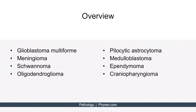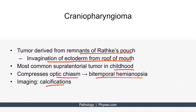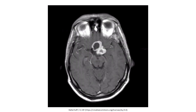The last topic is craniopharyngioma. This is a tumor derived from the remnants of Rathke's pouch, which is an invagination of ectoderm from the roof of the mouth. It's the most common supratentorial tumor in childhood and frequently compresses the optic chiasm, leading to bitemporal hemianopsia. On imaging, calcifications can be observed. Here are MRI images showing the tumor located in the region of the optic chiasm near the anterior pituitary gland, illustrating how the optic chiasm may be involved, giving rise to bitemporal hemianopsia.